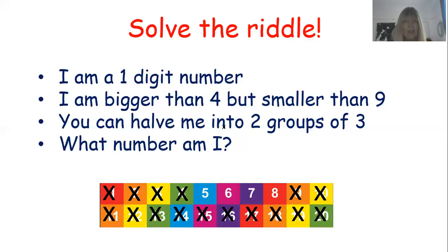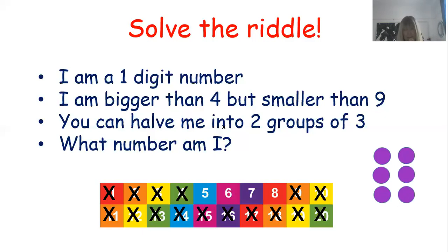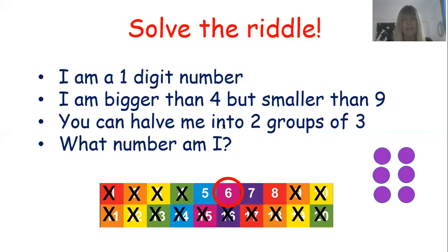Next clue: you can halve me into two groups of three. Two groups of three — one group of three and another group of three. So those are two halves of what number? Have you worked it out? I think it's six. If you thought it was six, well done — you've solved the riddle! Next time I'm going to make it just as challenging but see if you can work it out for yourselves.